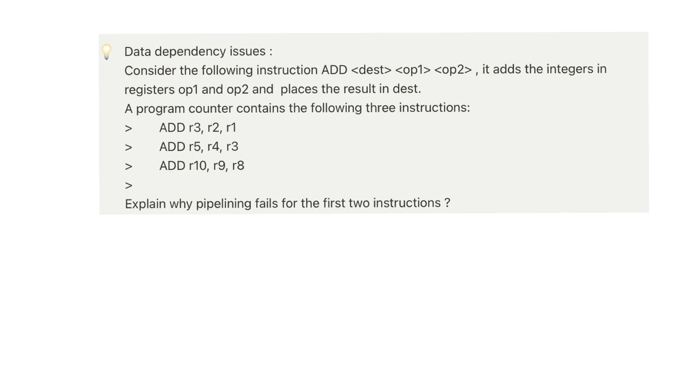So although it may seem like pipelining doesn't have any issues and it works very well, this is not really the case. There are some issues that can follow. So consider the following instruction ADD and it takes in three registers. We have DEST which is the destination and OP1 and OP2. Now OP1 and OP2 store the integers that we are going to add. Or they could even be binary in fact. So a program counter contains the following three instructions. Add R3, R2, R1. This means these two are the integers we'll add and we'll store it in R3. So this would be R1 plus R2 stored in R3. And for the next one, we have R5 as the destination and we're going to add R3 and R4. And similarly over here we have R9 plus R8 stored in R10. So explain in this case why pipelining would fail for the first two instructions.